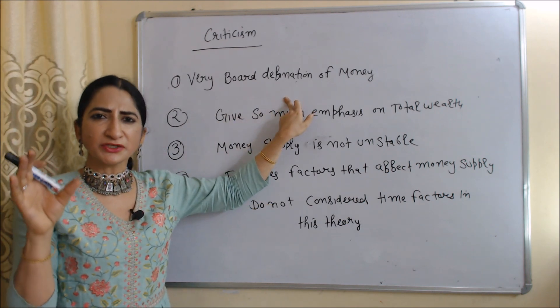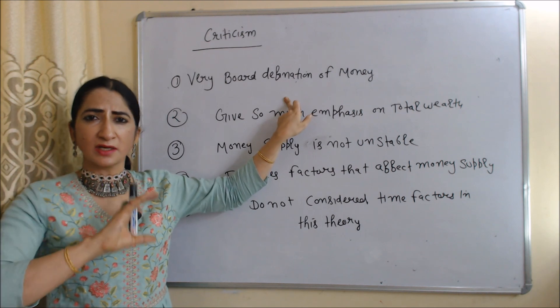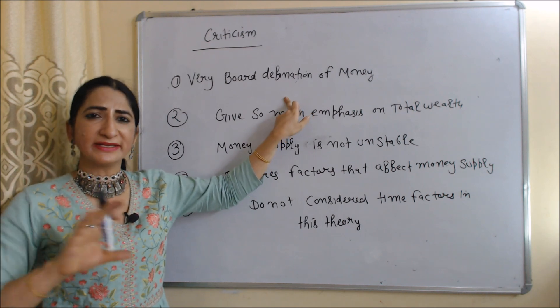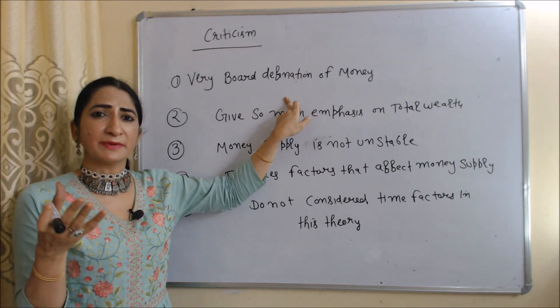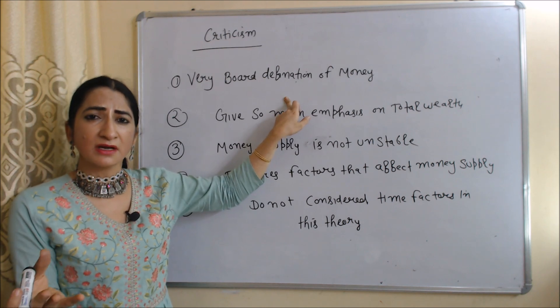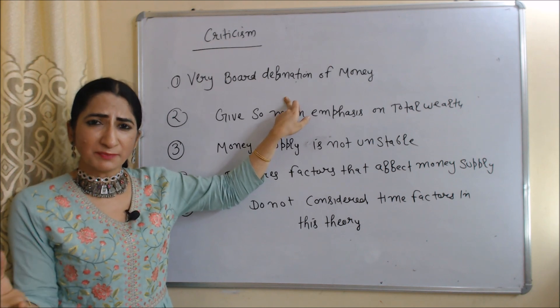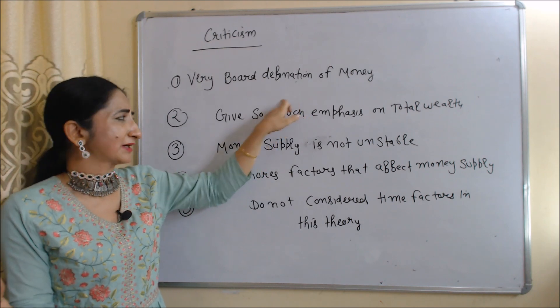When money demand is constant and only money supply increases, national income will also increase. When national income increases, total expenditure will also increase. Now we are going to talk about the criticism of this theory. This theory gave a broad definition of money — it includes so many things in money, for example cash, coins, demand deposit, time deposit, etc.